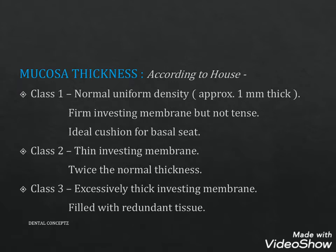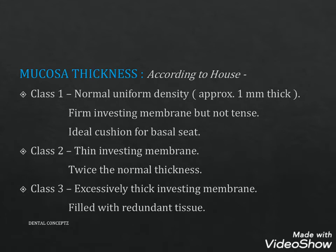The quality of the mucoperiosteum may vary within each arch. Tissues may be extensively thin in one area where teeth have been missing for a long time, and normal where teeth were removed recently. Other areas may be excessively thick with localized regions of redundant tissue. Such variations make it difficult to equalize pressure under the denture. The mucosal thickness can be classified into three classes.